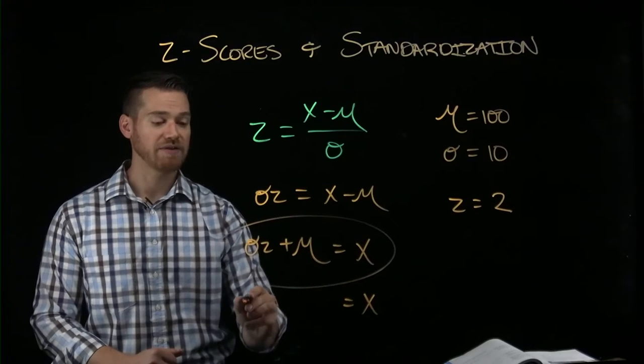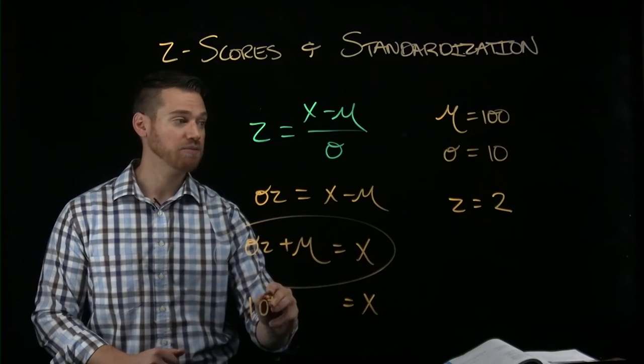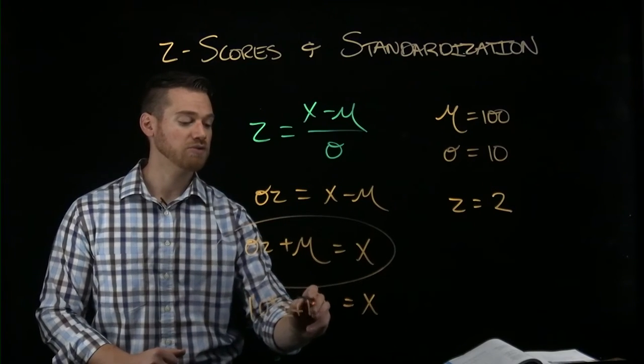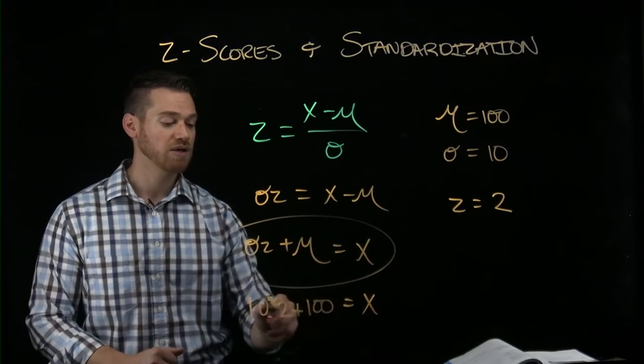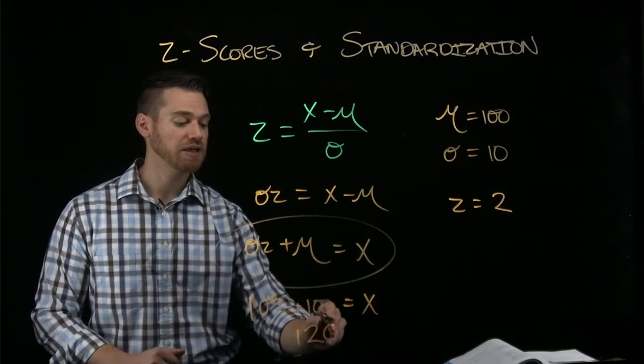So here we would have 10 times 2 plus 100 equals x, which is going to be 120.